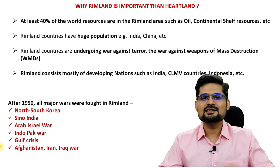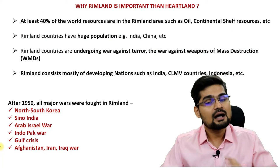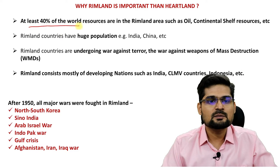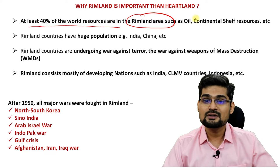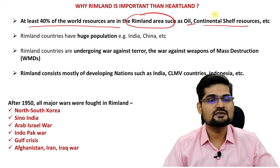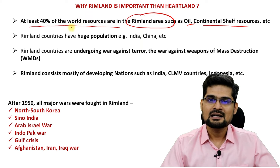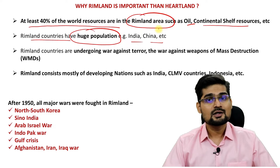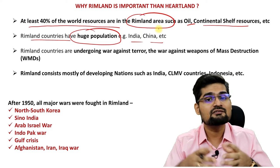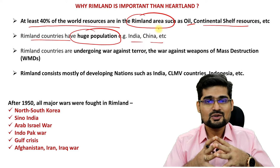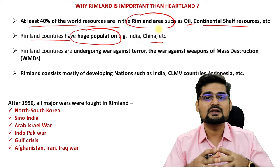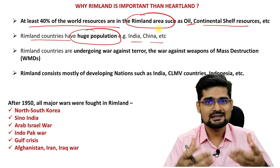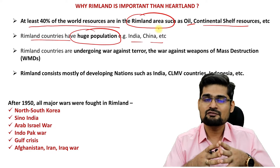Why is rimland more important than heartland, according to Speakman? Because of several reasons: at least 40% of world resources are in rimland areas — for example, oil, continental shelf resources, metallic minerals, and others. Rimland countries have huge populations, like India and China, which makes them potentially a greater economic area and market. The biggest population will have the biggest human resource — like India's youth dividend, which is why people say it's India's century.